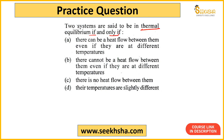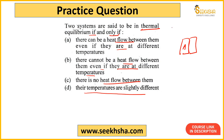Next question: two systems are said to be in thermal equilibrium if and only if - option A: heat flow ho raha hai dono ke beech mein aur dono different temperatures pe hain; option B: there cannot be heat flow between them even if they are at different temperatures; option C: there is no heat flow between them; option D: their temperatures are slightly different. Thermal equilibrium ka simple concept - for example do bodies A aur B hain jo ek doosre ke contact mein hain. A garam hai jaise 200 degree Celsius, aur B ka temperature 150 degree Celsius hai.